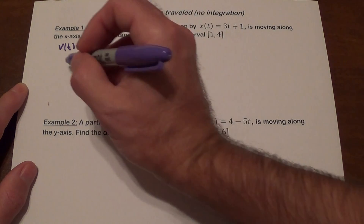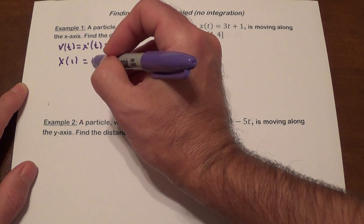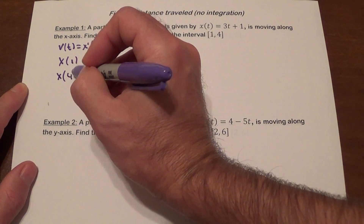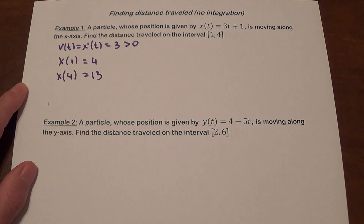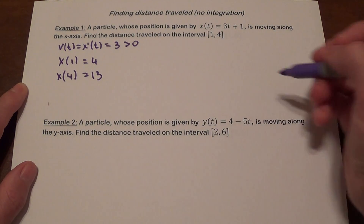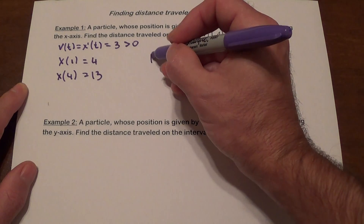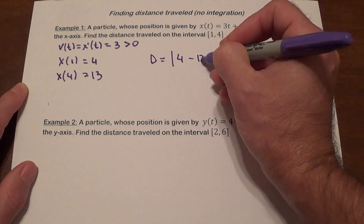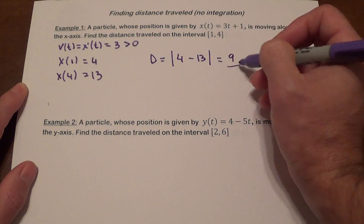So what we do: we're going to find x(1), which is 4, and x(4), which is 13. We're going to use the absolute value so we don't have to think too hard about which value is higher. To find the distance, we take the absolute value of the change in position, and that gives us 9.